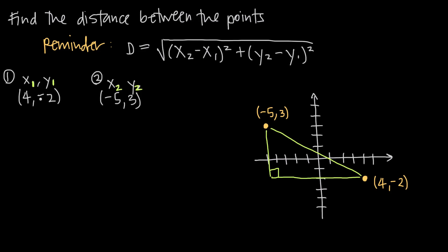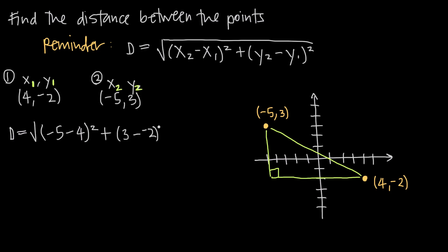So now all we have to do is plug these into our distance formula. We say d is equal to the square root of (x sub 2, which is negative 5, minus x sub 1, which is 4) squared, plus (y sub 2, which is 3, minus y sub 1, so minus negative 2) squared — all under our square root sign.